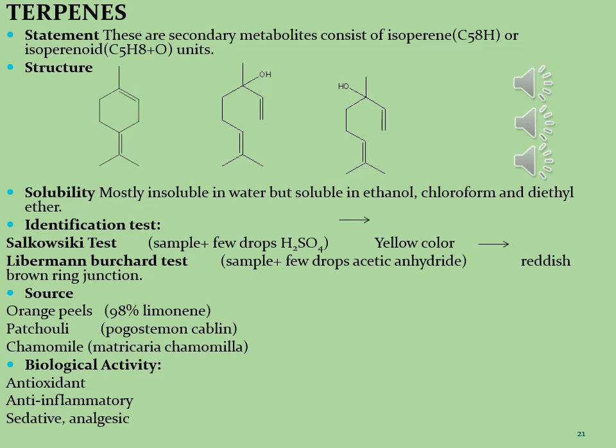Three structures of terpene molecules are limonene, myrcene, and linalool. Two of these structures consist of a hydroxyl group while one does not. Molecules that have a hydroxyl group are called terpenoids, and molecules that do not have a hydroxyl group do not fall in the class of terpenoids. Terpenes are mostly soluble in organic solvents and insoluble in water.